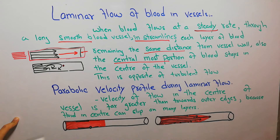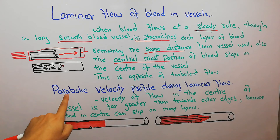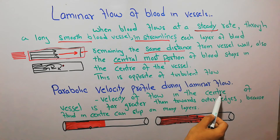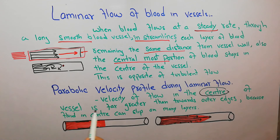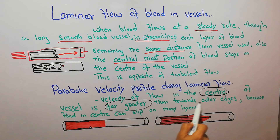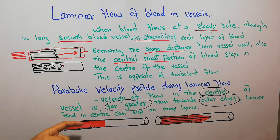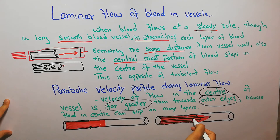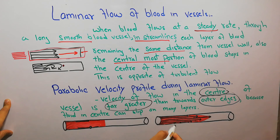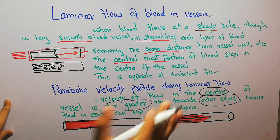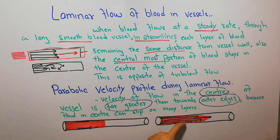Because the central layer slips on smooth layers from both sides, it moves far farther compared to the layer near the vessel wall. This effect is known as the parabolic velocity profile during laminar flow. Velocity of flow in the center of the vessel is far greater than towards the outer edges because the central layer has many layers to slip on, while the outer layers face friction and resistance from the endothelium.